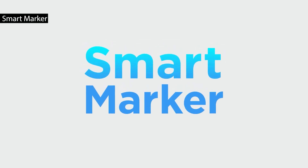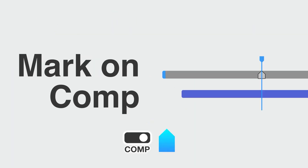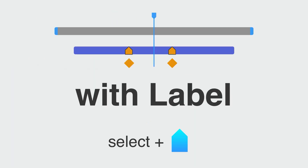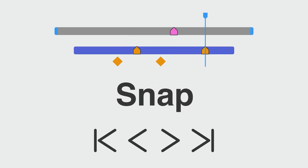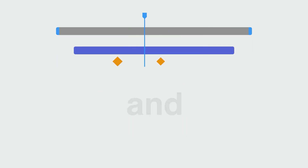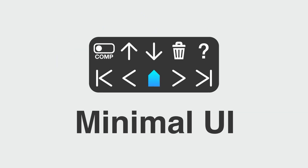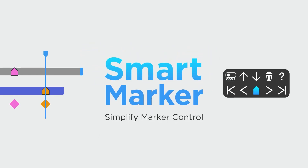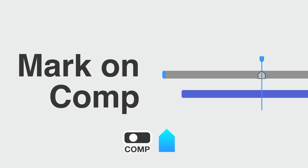Smart Marker is a streamlined utility that makes creating, moving, and managing markers fast and intuitive. It lets you generate markers from the current time, keyframes, or motion peaks, inherit labels automatically, and move markers between layers and compositions with just a single click. With snapping tools, quick deletion options, and a clean minimal interface, it's ideal for timing, organization, and animation planning.